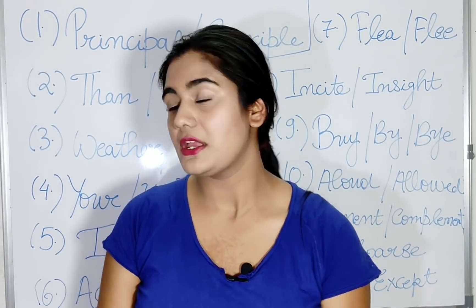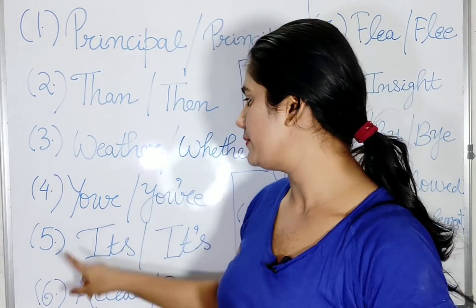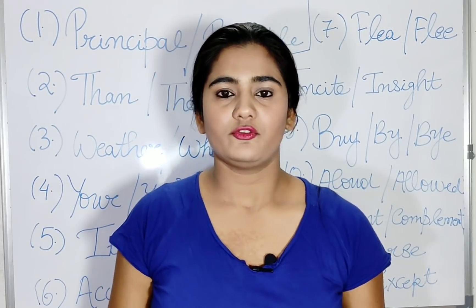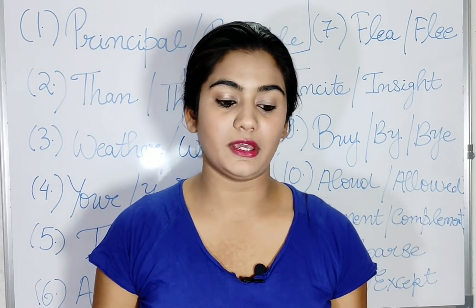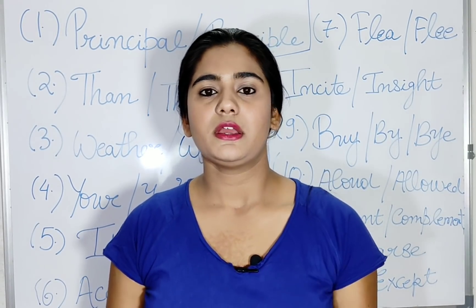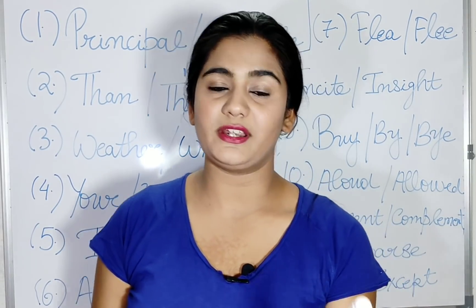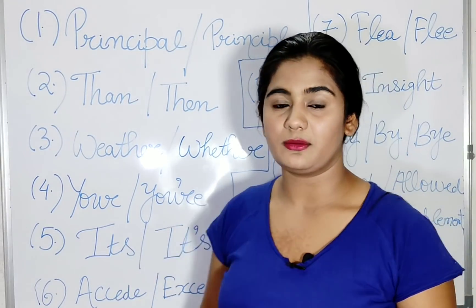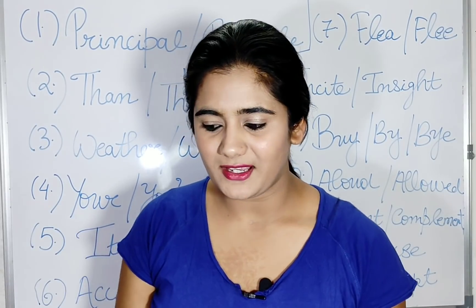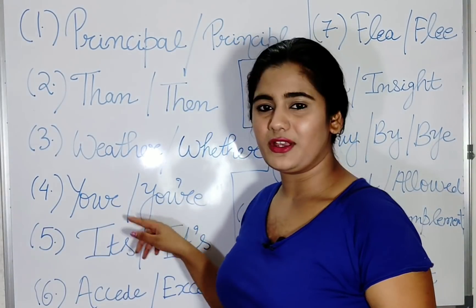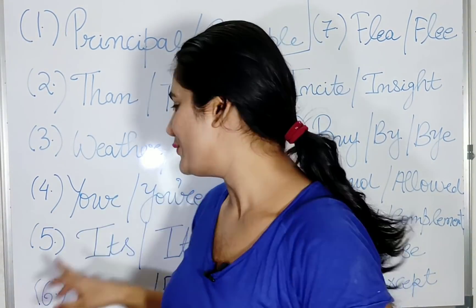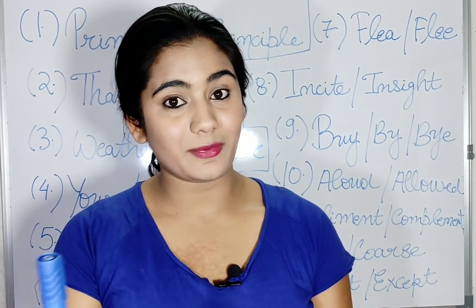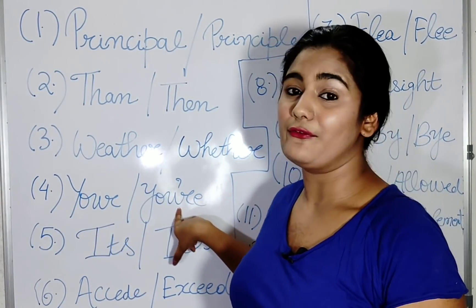Next is 'your' and 'you're.' This is again a very confused pair. 'Your' means something belongs to someone — like 'this is your marker.' If I say 'thank you for lending me your marker,' that's the possessive 'your.' But 'you're' with an apostrophe means 'you are' — so 'you're a very good person' means 'you are a very good person.' Thank you for lending me your marker — you're a very good person.